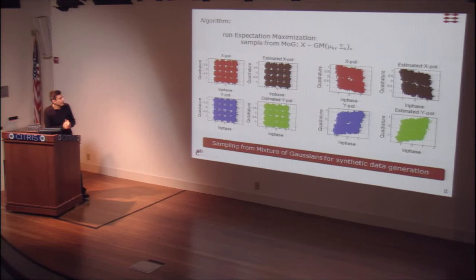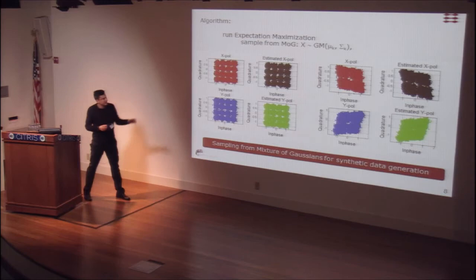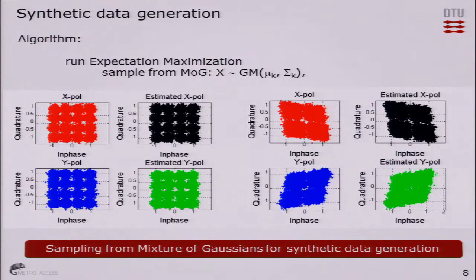In order to extract the means and covariance matrices in the maximum likelihood sense, we use the expectation maximization method. This is our true demodulated constellation shown in red and blue. We run the algorithm to find the parameters that generated this data, and then we sample from the distribution — sampling from the mixture of Gaussians. On the right we have the estimated x and y polarizations. When the system is dominated by AWGN noise, we see circularly symmetric clusters and a very good representation of our true constellations.